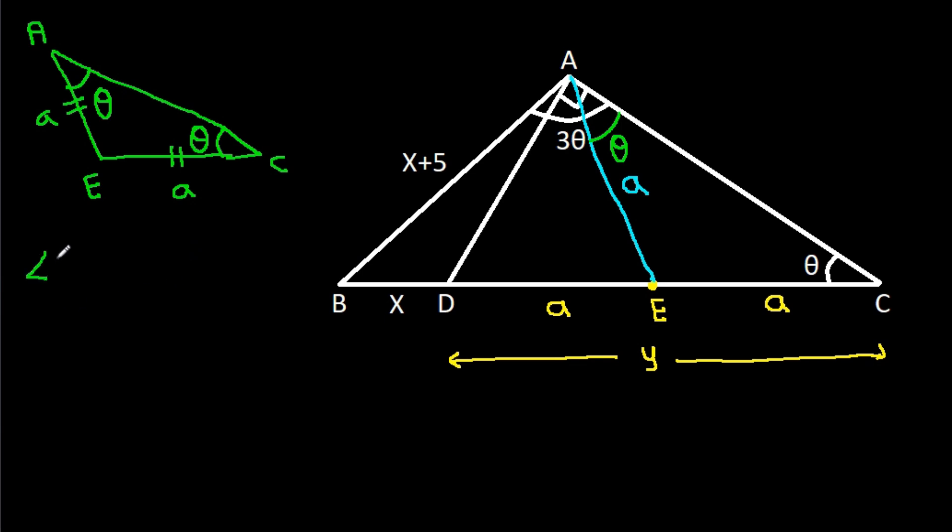We have angle BAC is 3θ. So this angle will be 3θ minus θ, that will be 2θ.